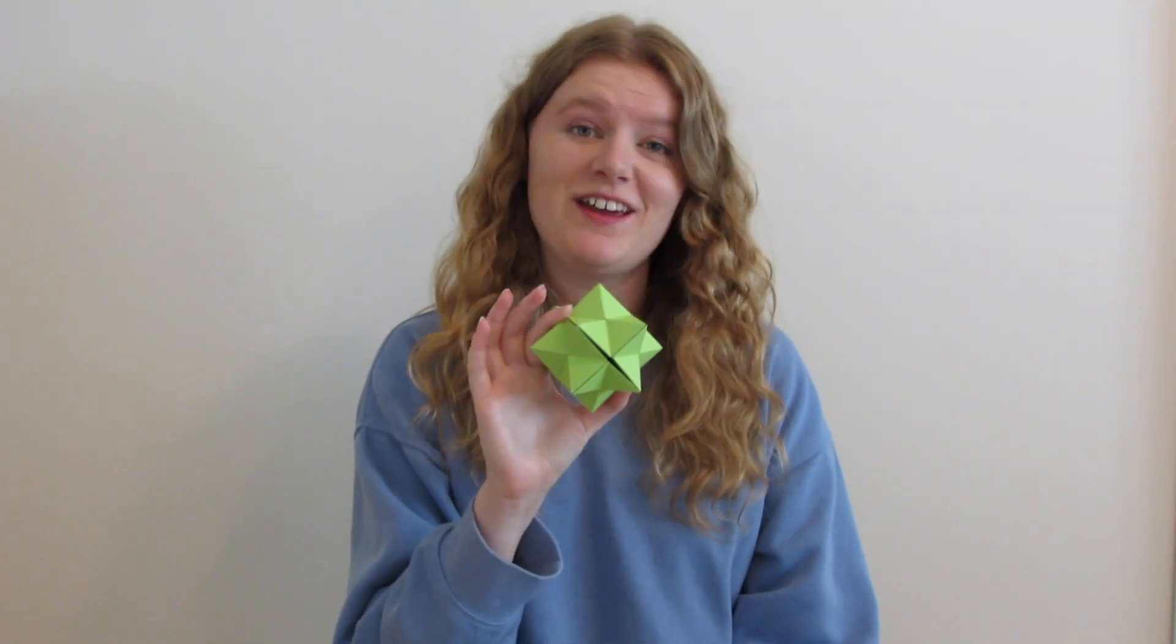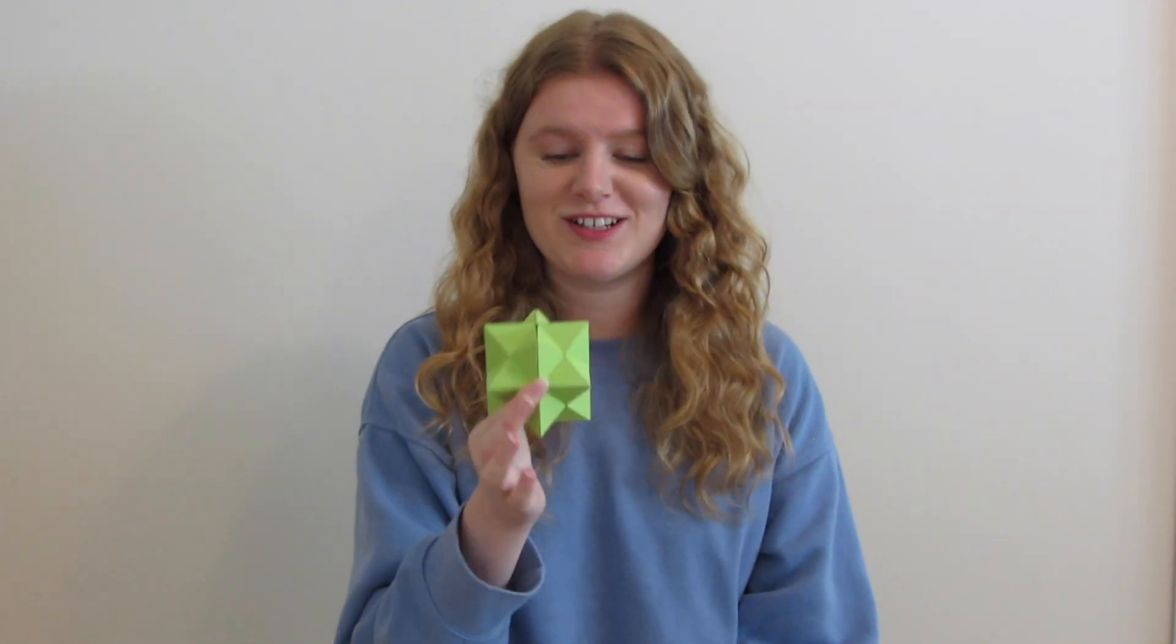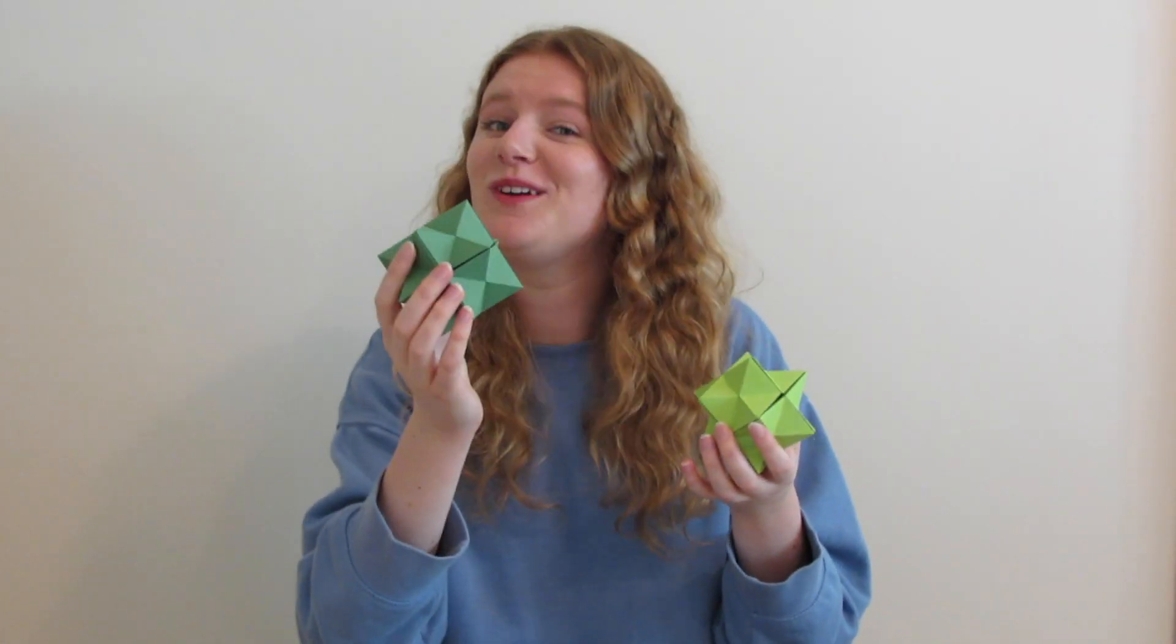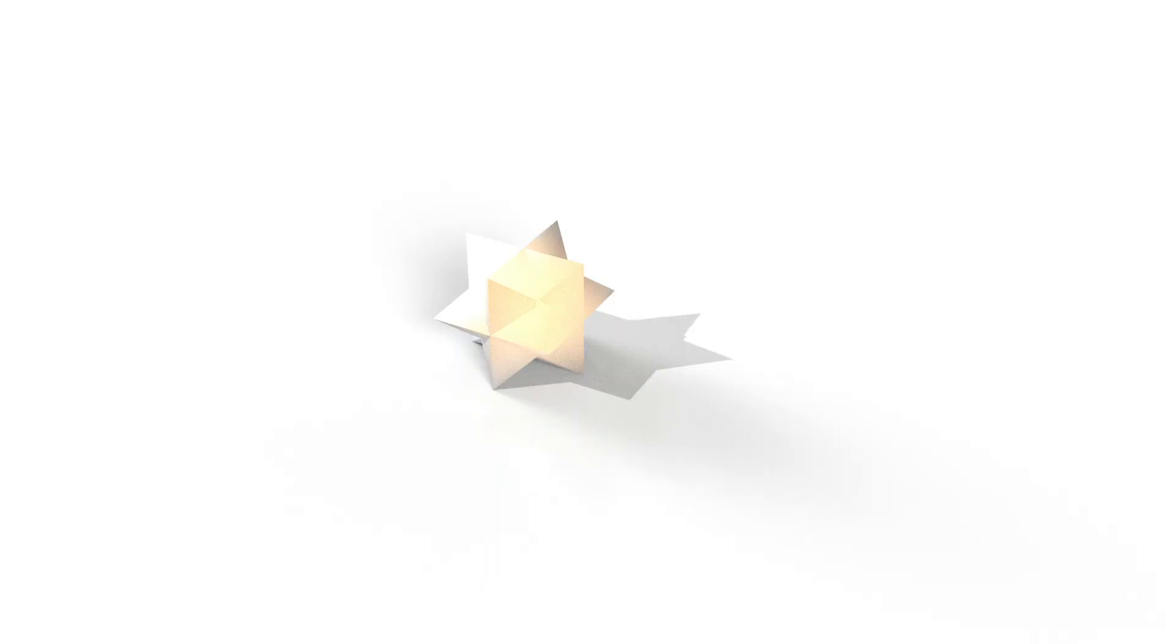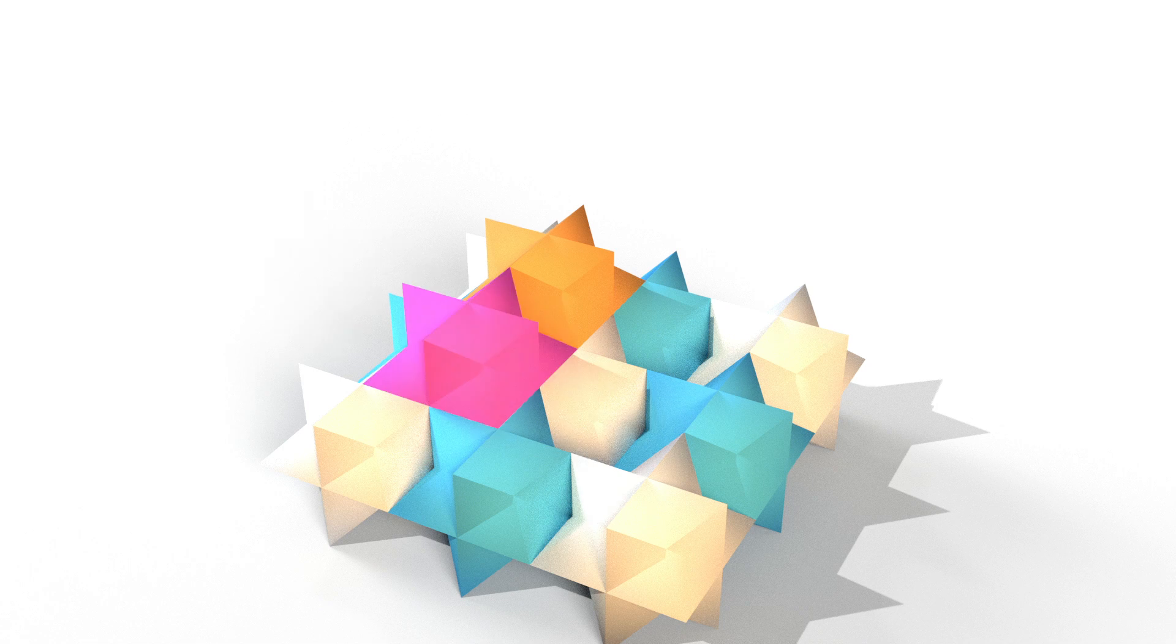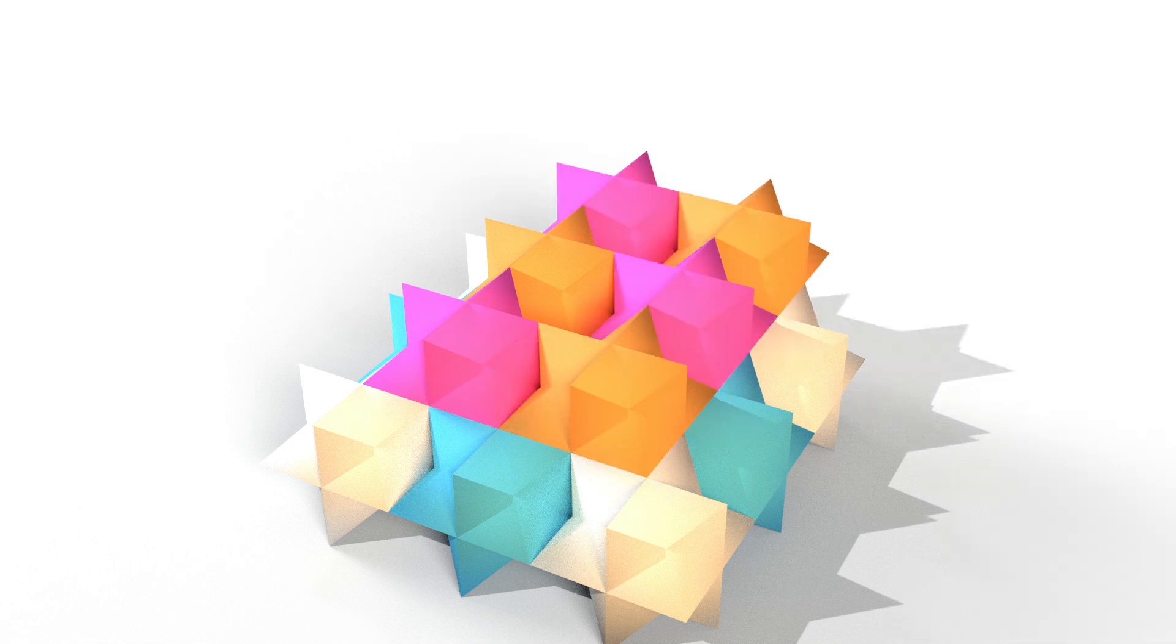It has 48 faces, 72 edges and 26 vertices. One of the coolest things about Escher's solid, as well as its wonderful appearance, is it's a space filling polyhedron. So we can kind of tessellate them in three dimensions and tile space.